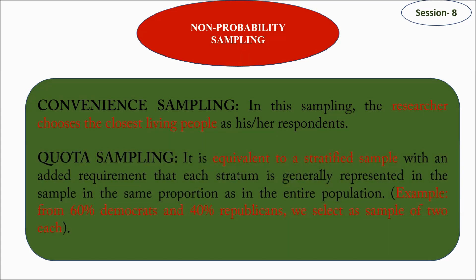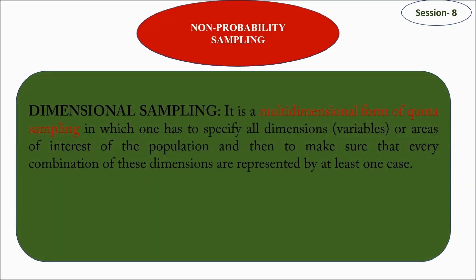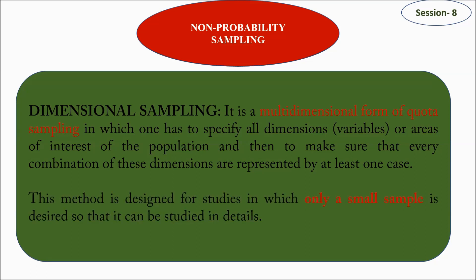Next is quota sampling, which is very similar to stratified sampling. A quota is decided for particular groups — for example, 60% Democrats and 40% Republicans as a sample — and then the sample is selected on that basis. Then there is dimensional sampling, which is a multi-dimensional form of quota sampling in which one has to specify the variables of interest in the population and ensure that every combination of these dimensions is represented at least once. For example, soil and slope, or soil and vegetation. This method is designed for studies in which only a small sample is required.